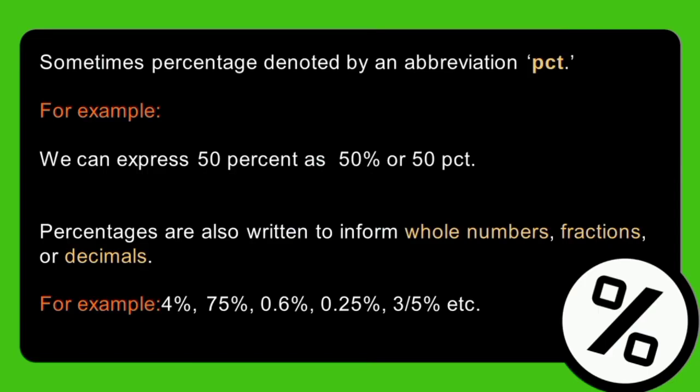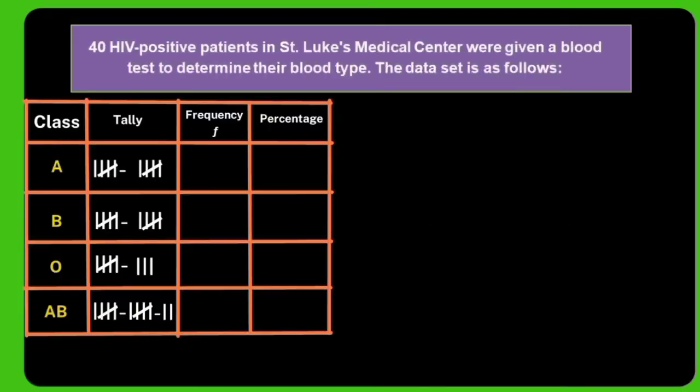Here is a given example: 40 HIV-positive patients in Saint Luke's Medical Center were given a blood test to determine their blood type. The data set is as follows — we have class, tally, frequency, and percentage. This class is categorical since we have no interval, so it will be ungrouped.